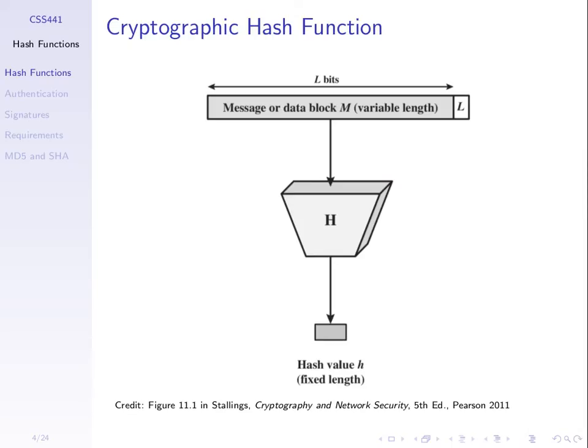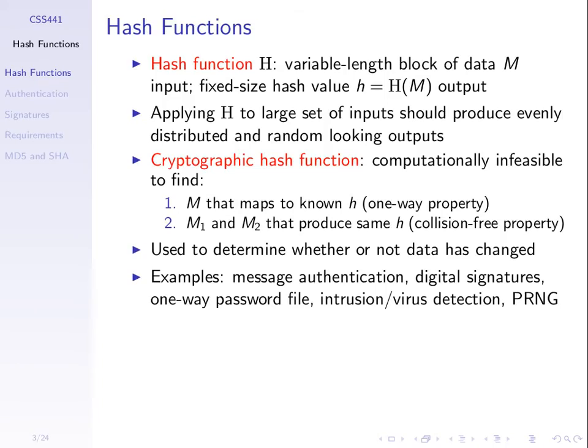The message is normally larger than the hash value - it can be much larger. Maybe the message is a one gigabyte file and the hash value is a 128-bit value. If the input of the function can be much larger than the output, what does that mean with respect to our properties? Collisions are possible. If I have a function that takes a large input and produces a small output, then it must mean that two inputs will map to the same output. So in theory, collisions are possible.